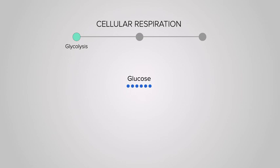Glycolysis takes place in the cytoplasm, where glucose is broken into two three-carbon molecules called pyruvate. This portion of cellular respiration produces two ATP.